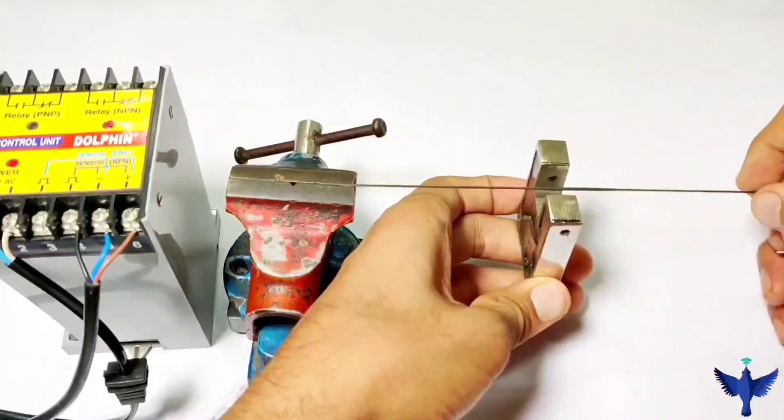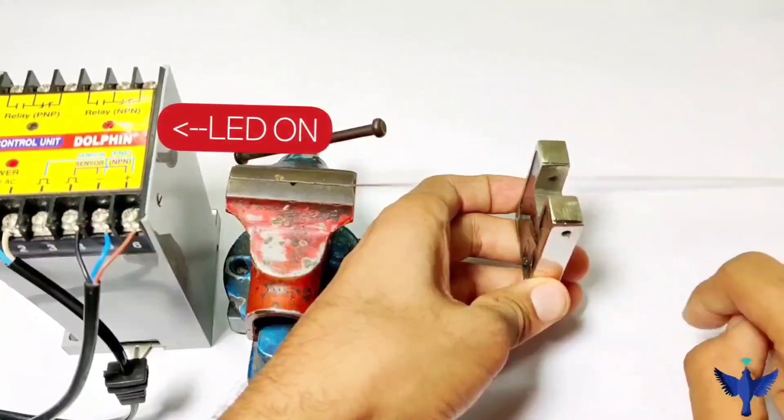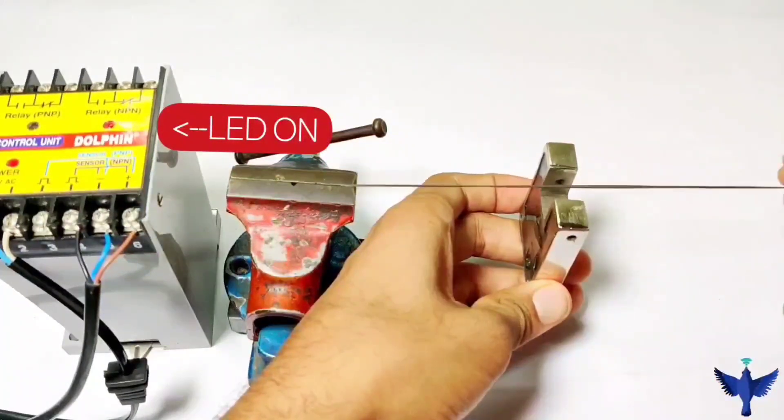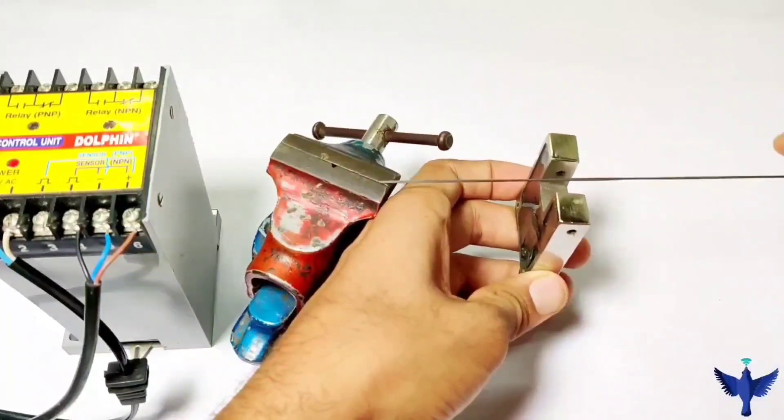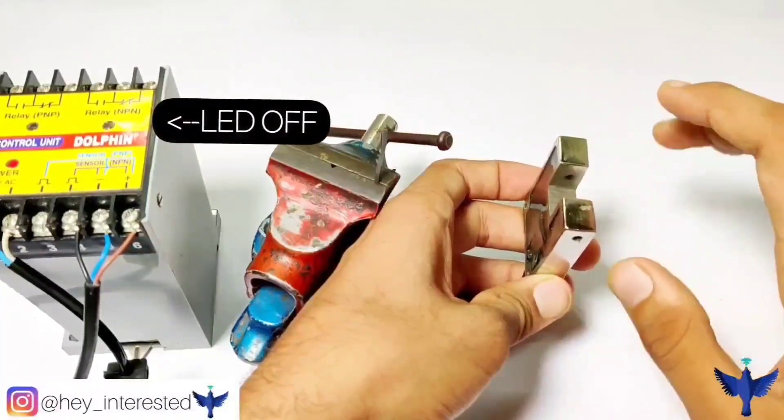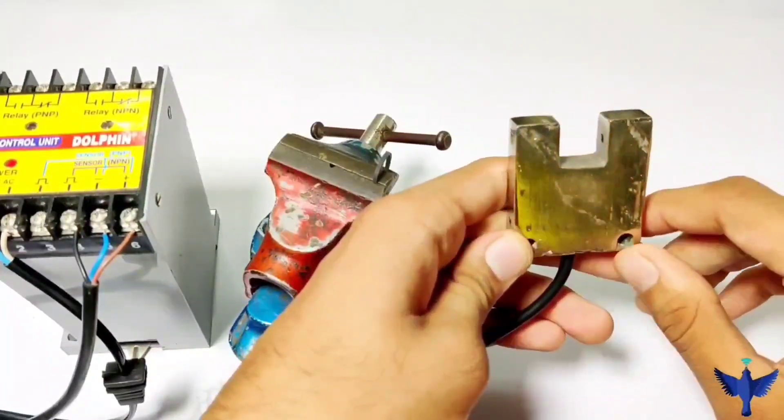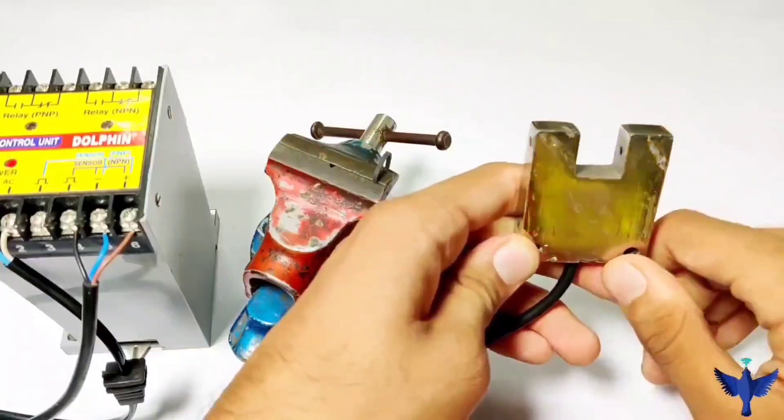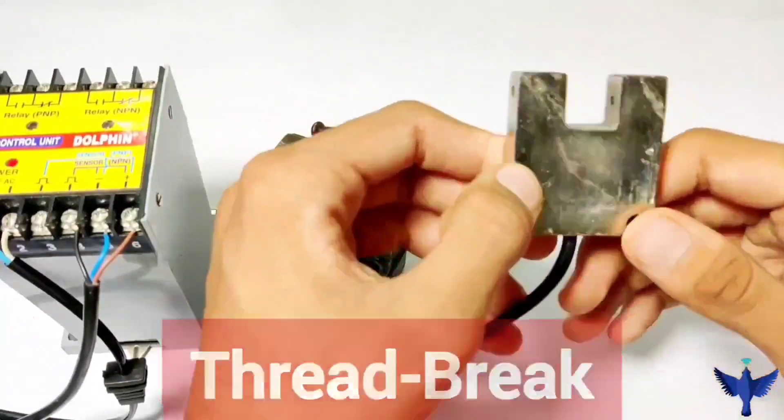So what happens if the thread is vibrating and some malfunction happens? The thread breaks. You can see the thread breaks. What happens is that we will not get any output at that point. So this sensor comes out very handy for the application of thread break sensor. Usually it is used in textile industries.